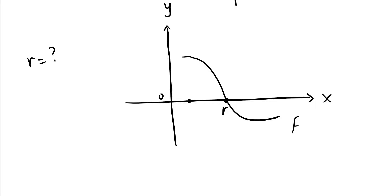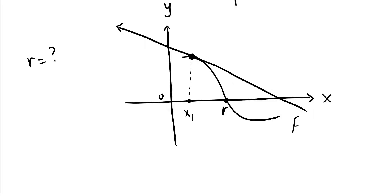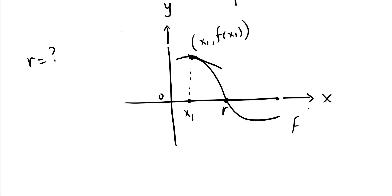Newton said: I'm going to guess a value for r — call it x₁. Then he projected vertically up to the function, giving a point. At that point, he drew a tangent line. The coordinates of that point are (x₁, f(x₁)). The tangent line intersects the x-axis at x₂. Let me redraw this more accurately: this is our x₂.